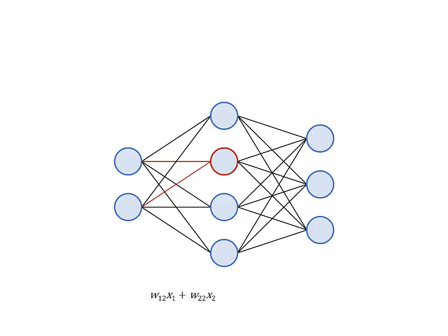This sum, plus an extra offset known as the bias, is passed as the input to a function known as the transfer function for that layer. The output from this function is the value passed to the neuron. This process is repeated for all the neurons in the layer, and then again for the next layer.